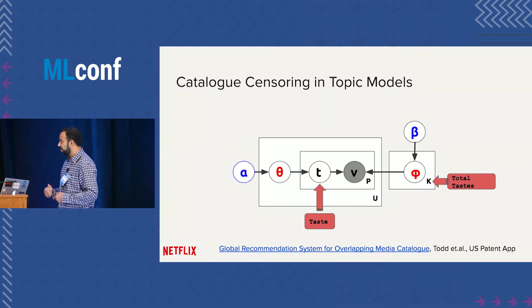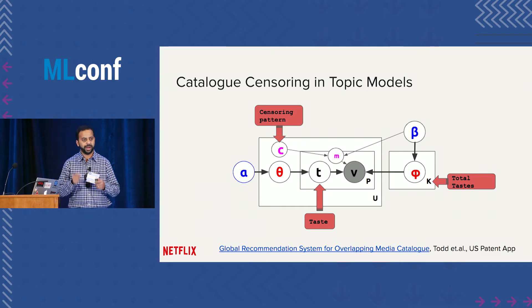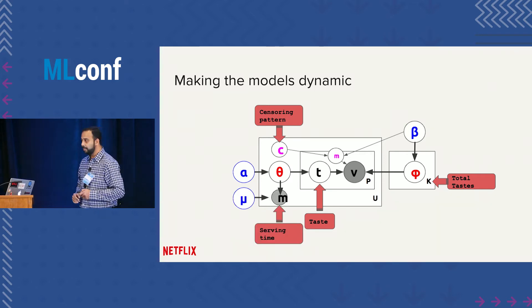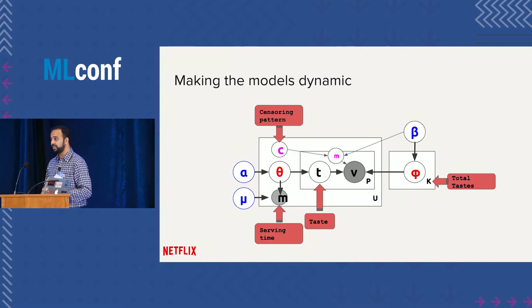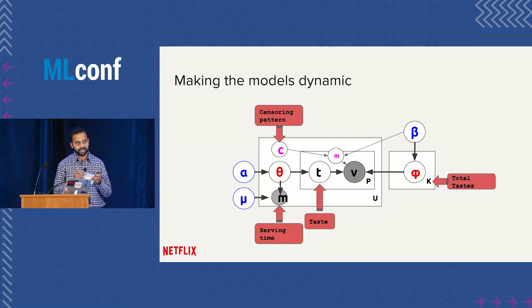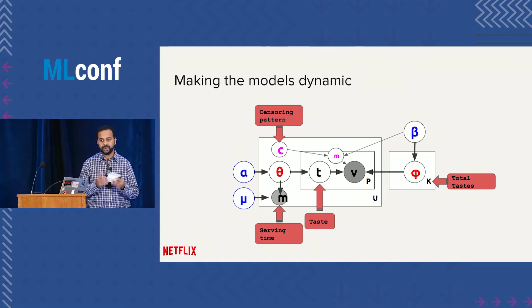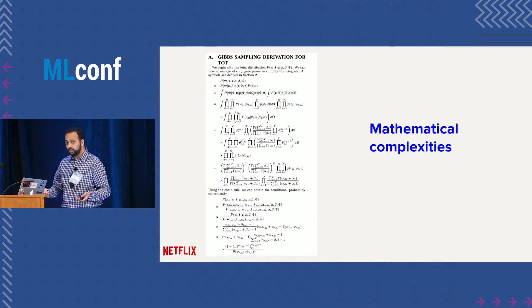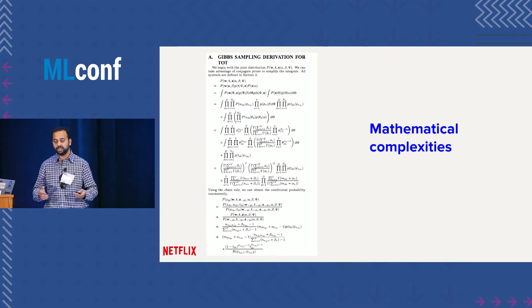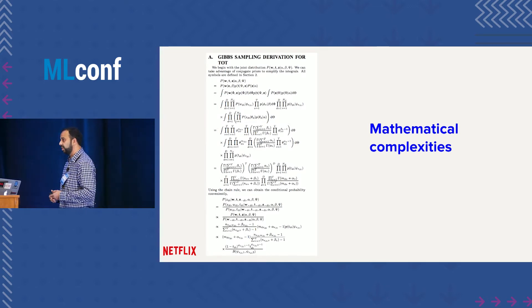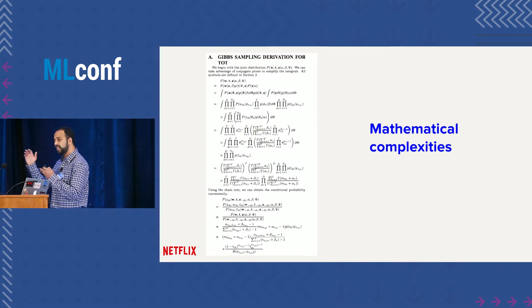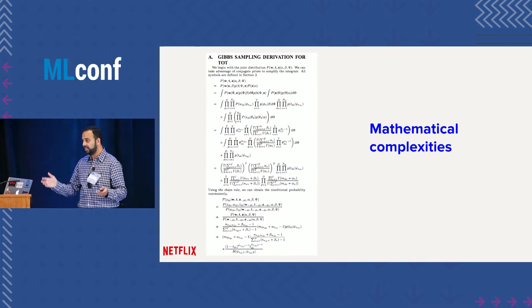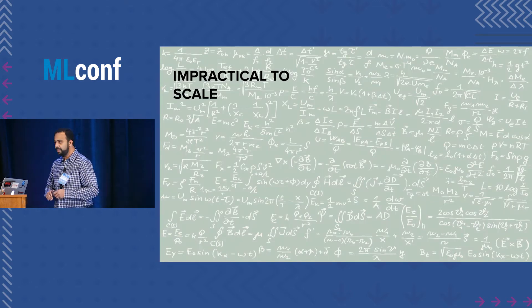We took this classical graphical model and extended it with a censoring pattern to tell the model which videos are available in which country. We also wanted to make the model dynamic so that if a user is watching on a weekend, the model understands that taste differences change depending on the time of day and day of the week, so we added extra random variables denoted by m. Very soon we realized the model was becoming very complex — notorious for inference because of variational inference schemes or Gibbs sampling.